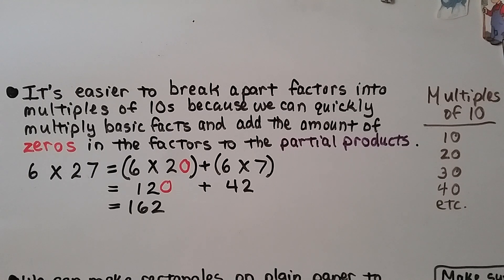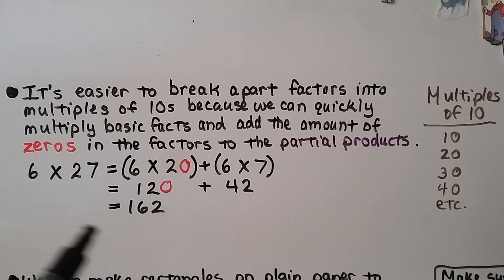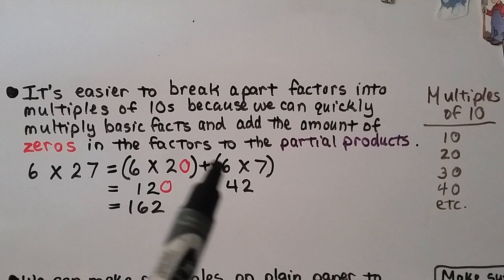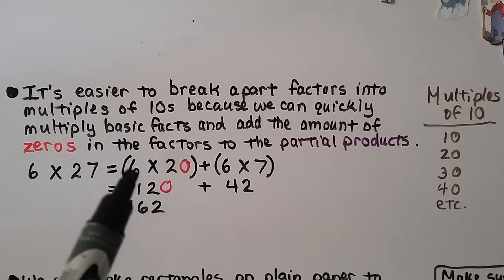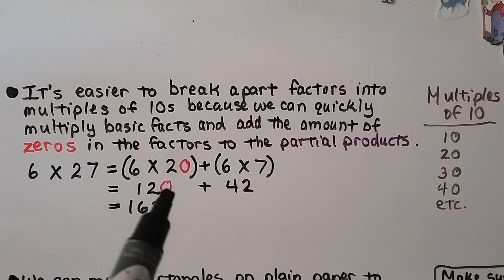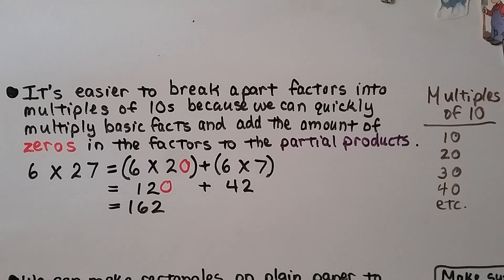It's easier to break apart factors into multiples of 10 because we can quickly multiply basic facts and add the number of zeros in the factors to the partial products. Multiples of 10 are like 10, 20, 30, 40. For example, 6 times 27: it's easier to break it into 6 times 20 plus 6 times 7. 6 times 20 — basic fact 6 times 2 is 12, add the zero to get 120. 6 times 7 is 42. 120 plus 42 equals 162. Multiples of 10 make it easy to do mental math.